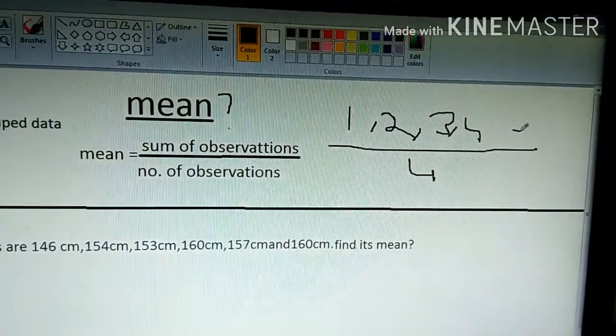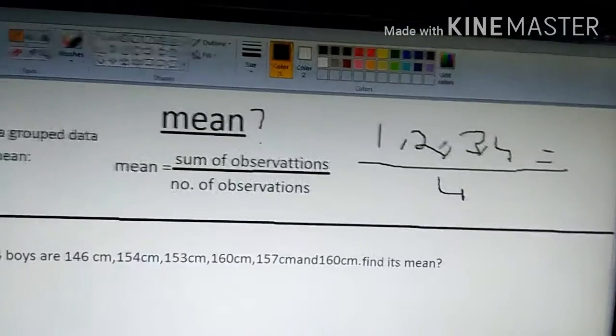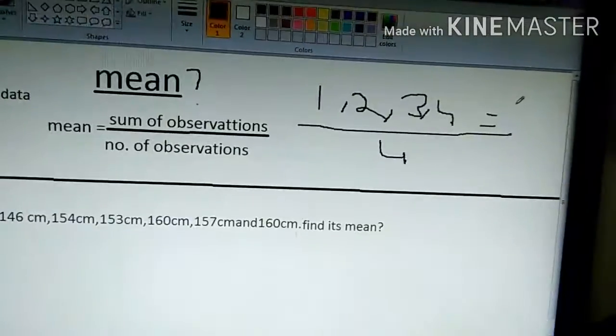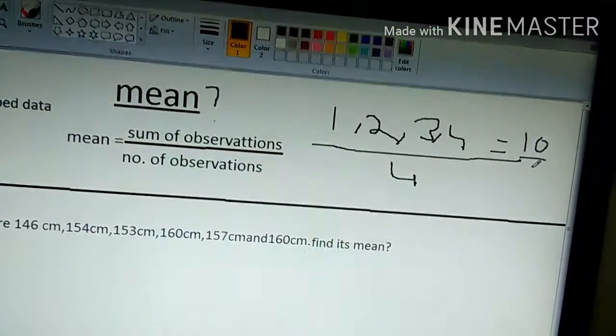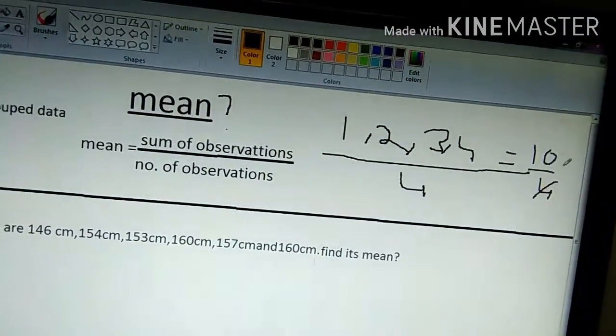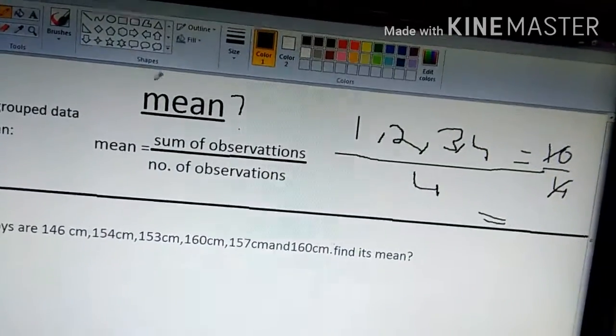Then, if we add the grand total, which means 4 plus 3 plus 2 plus 1, which gives 10 by 4. Now, we need to simplify. The answer obtained is the mean.